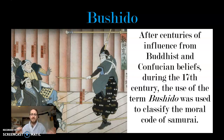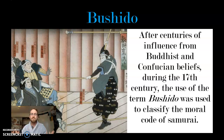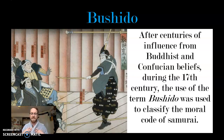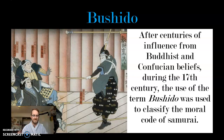Merchants in Japanese medieval society are at the bottom of the barrel. The reason being is that they are the greedy ones — all they care about is money. And if you're a Buddhist, being greedy just doesn't line up. So after centuries of Buddhist and Confucian beliefs, a new concept comes into play in the 17th century: what we are going to call Bushido. Bushido is a fancy term for the code of the samurai, a way in which the samurai were supposed to live.